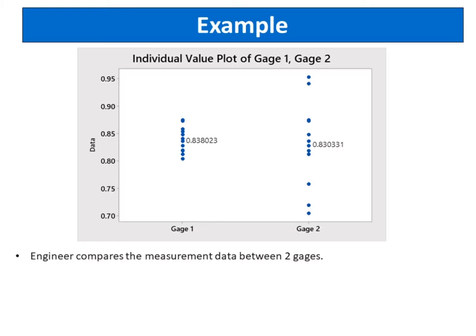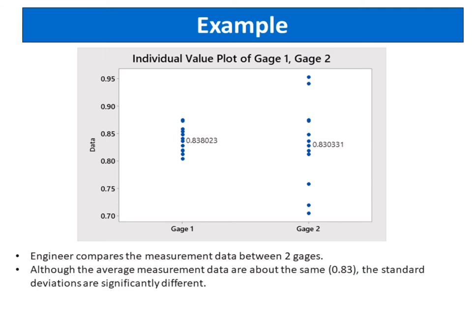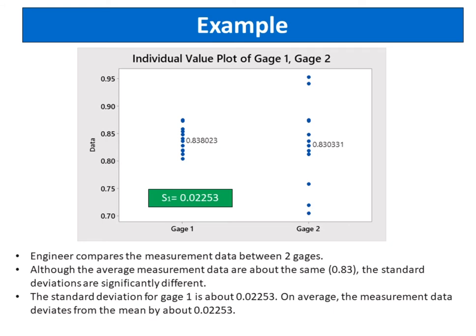For example, an engineer compares the measurement data between two gauges. Although the average measurement data are about the same, which is around 0.83, the standard deviations are significantly different. The standard deviation for gauge one is about 0.02253. On average, the measurement data deviates from the mean by about 0.02253.